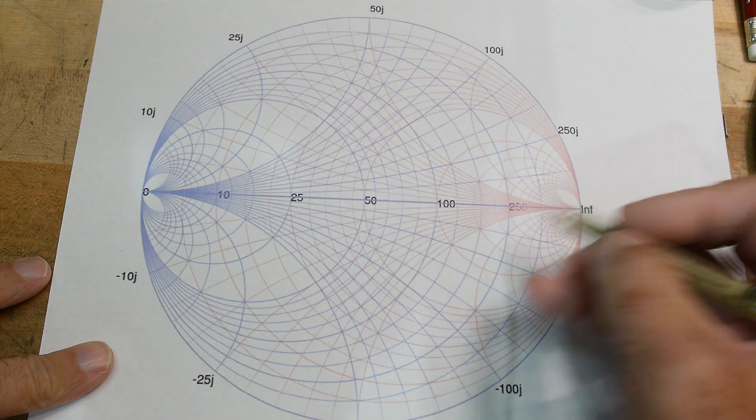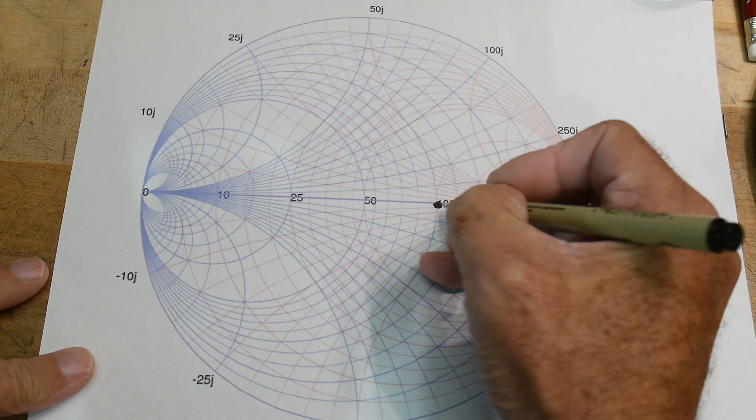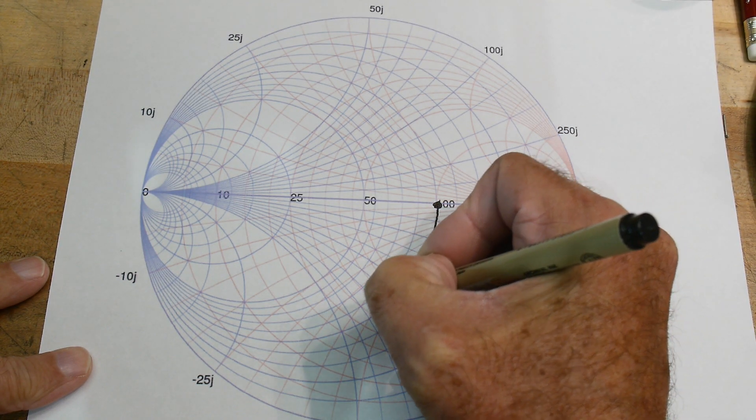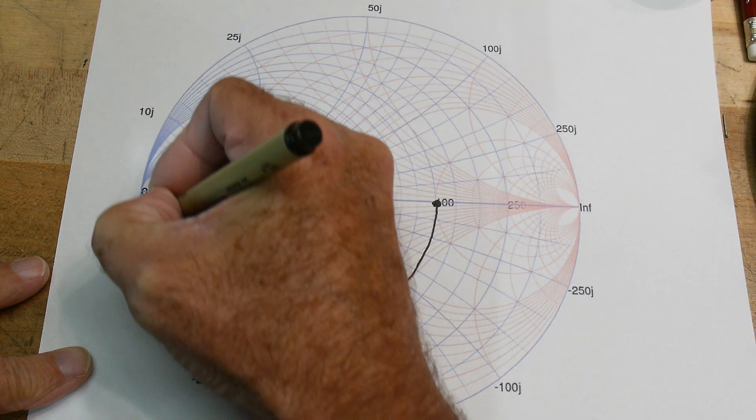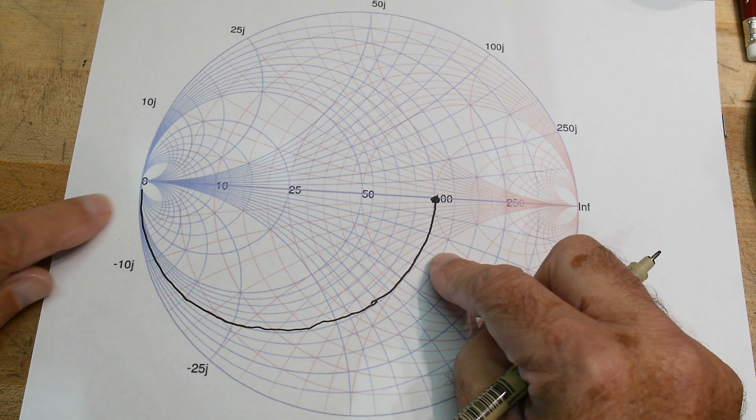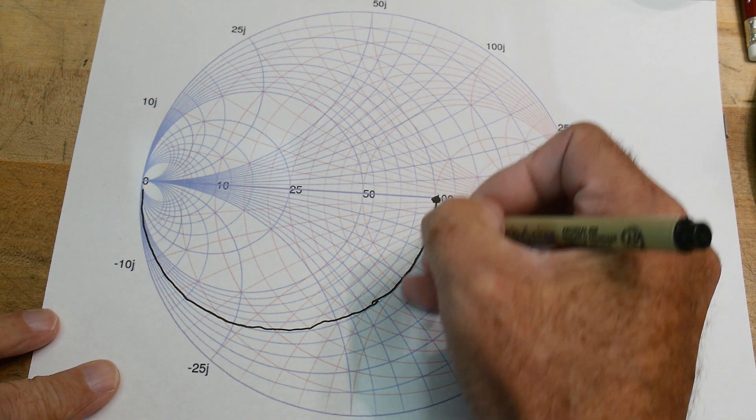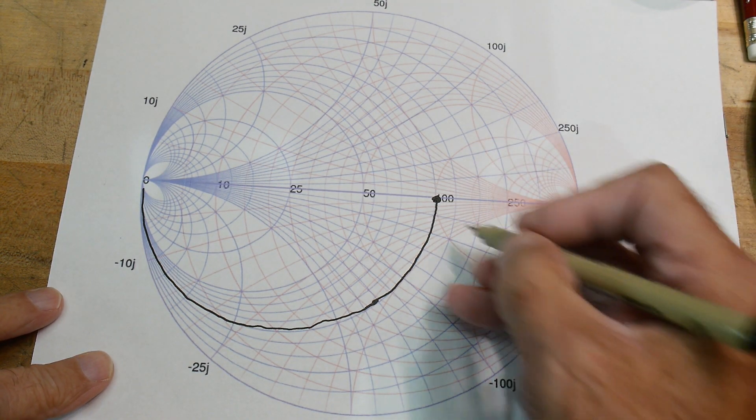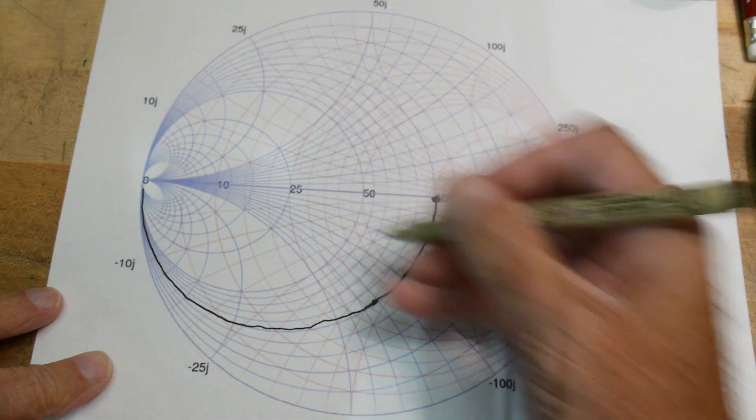The vector network analyzer only has these red curves. It does not have the blue curves. What we saw is starting here at 100 ohms and we're going to be traveling this direction. Now we get to travel on one of the blue curves. This blue curve goes all the way over at the short condition. That's the trajectory it was taking. Things in series would have been traveling on the red curve but things in parallel would be traveling on the blue curve.